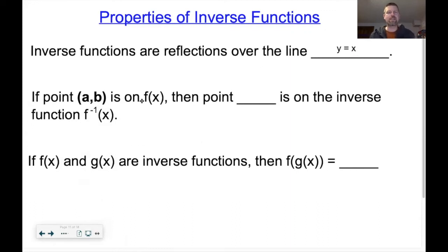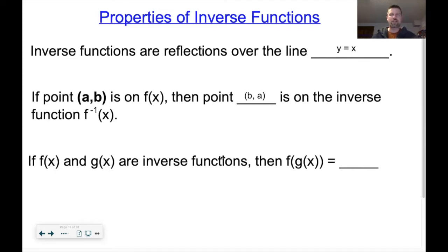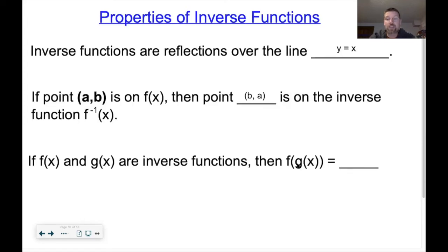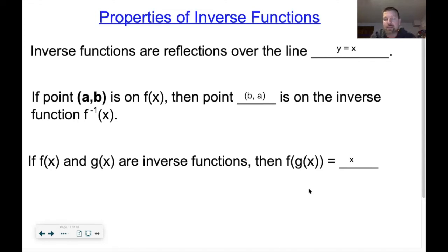To summarize inverse functions: if point (a, b) is on f of x, then the point (b, a) is on the inverse function. And if f and g are inverse functions, then f of g of x equals x — inverse functions undo each other. You can check if two functions are inverses by composing them: do f of g of x, simplify, and if you get x, they're inverses.